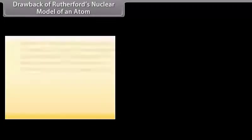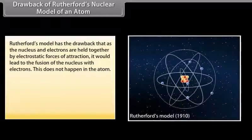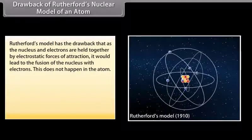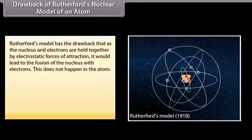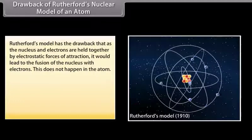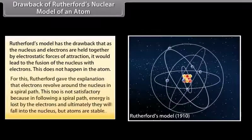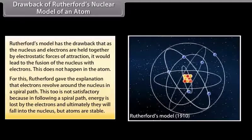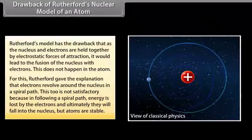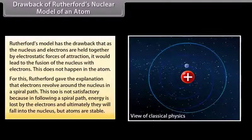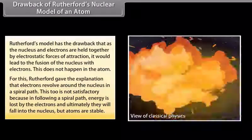Drawback of Rutherford's Nuclear Model: Rutherford's model has the drawback that as the nucleus and electrons are held together by electrostatic forces of attraction, it would lead to the fusion of the nucleus with electrons — but this does not happen in the atom. Rutherford gave the explanation that electrons revolve around the nucleus in a spiral path. This too is not satisfactory because in following a spiral path, energy is lost by the electrons and ultimately they will fall into the nucleus, but atoms are stable.